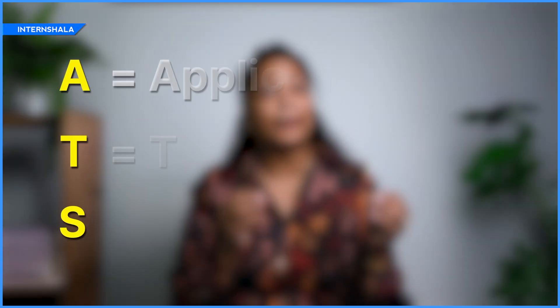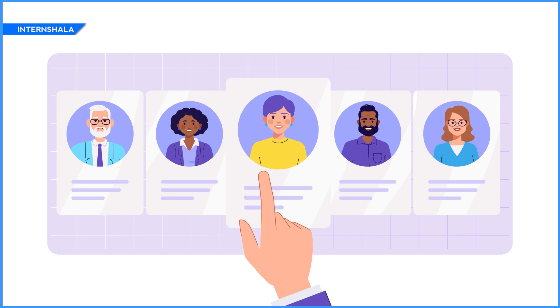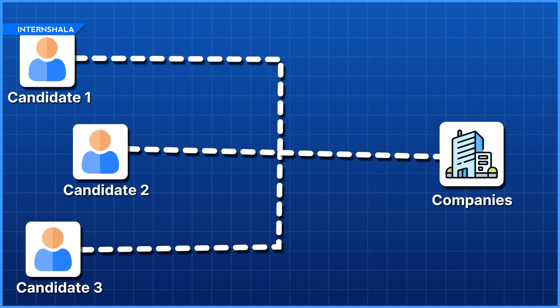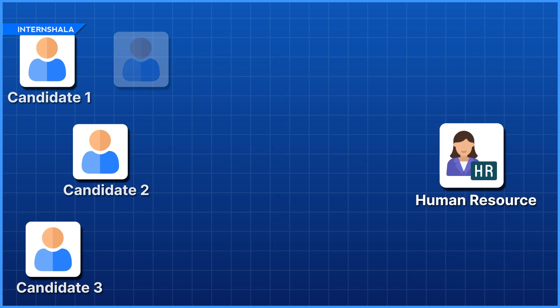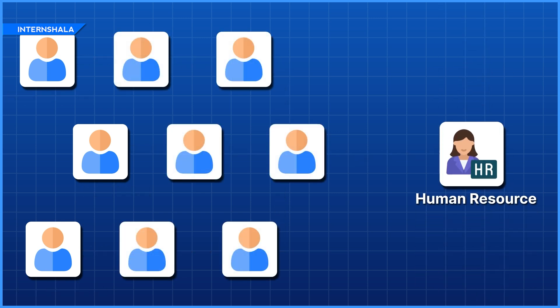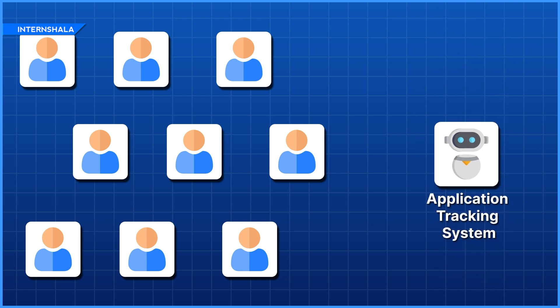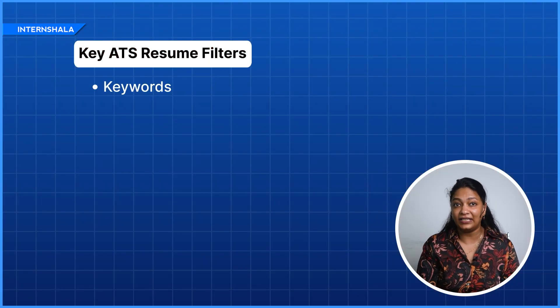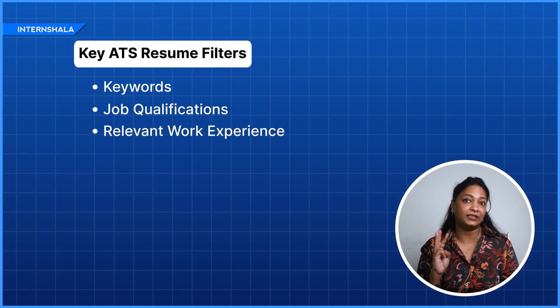ATS stands for Applicant Tracking System. It is a software that helps HR and companies to shortlist candidates. Companies get hundreds of job applications every day and it can be very difficult for an HR to shortlist these applications. To save time, companies use ATS, which rejects resumes that do not meet the job requirement by comparing them to the job description. ATS scans and filters resumes based on job-related keywords, job qualifications, and relevant work experience.